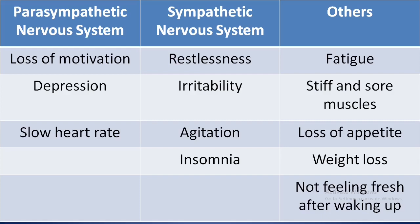Symptoms of overtraining syndrome fall into three groups. In the first group, symptoms are due to the balance tipping in favor of the parasympathetic nervous system. These types of symptoms are seen in athletes involved in aerobic or endurance training like marathon running. As a result, there may be negative symptoms like lack of motivation and depression, and the heart rate may also be lower. In the second group, symptoms are due to the activation of the sympathetic nervous system, seen in athletes involved in anaerobic or strength training like weightlifting.